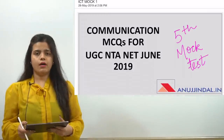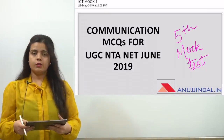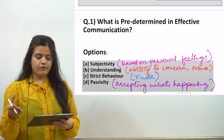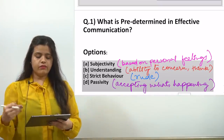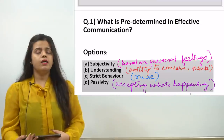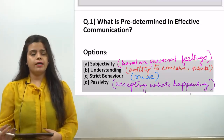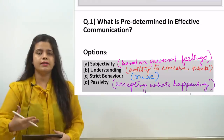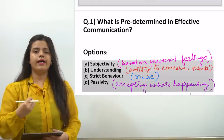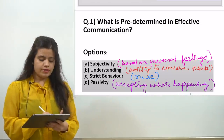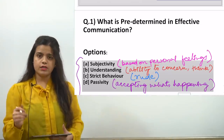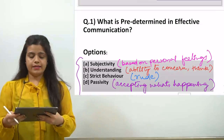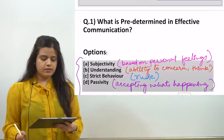Our today's topic is communication. We are starting the mock test paper, so let's begin with question 1. What is pre-determined in effective communication? The options are: 1st is subjectivity, 2nd is understanding, 3rd is strict behavior, and 4th is passivity.